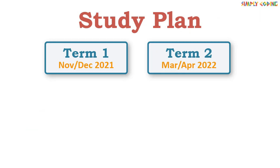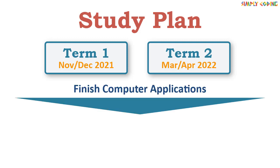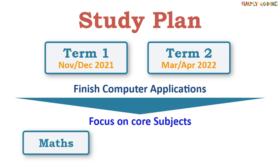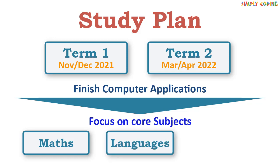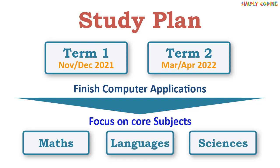Term 1 exam is in the November/December timeframe and Term 2 is in March/April. Since this is an easy subject, my suggestion is to pick up Computer Applications first and finish it so that you can focus on core subjects like Maths, languages, and Sciences. Now before we come to the study plan, let's see what kind of paper you can expect for Term 1.